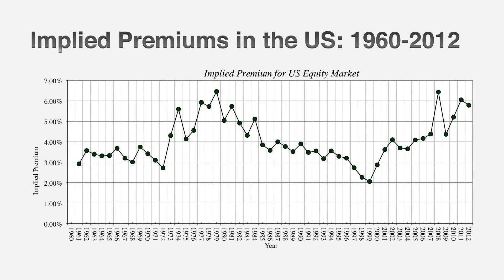You know what's neat about this? You can recompute this number the next day and get a different number. It's forward-looking and dynamic. To give you a sense of how this number has shifted over time, take a look at this graph showing the implied premiums over time. You might wonder — why do we care about implied premiums?